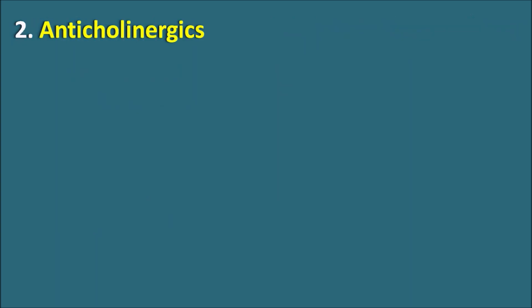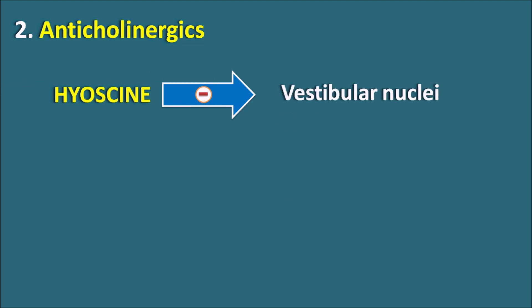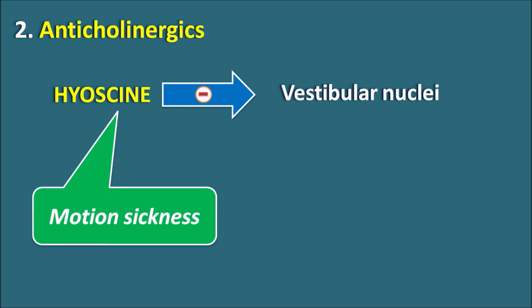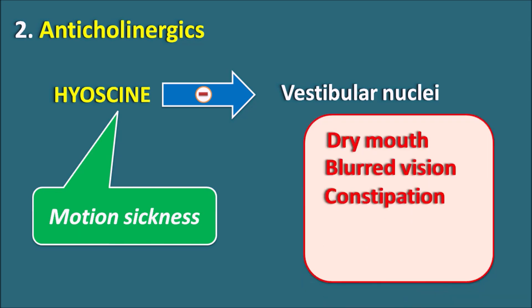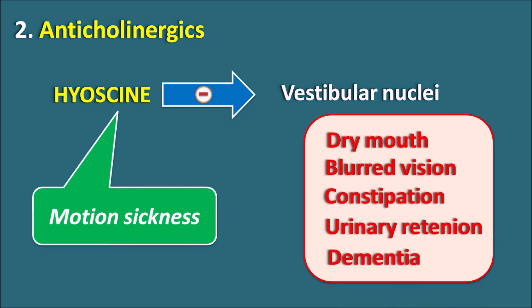The second class is the anticholinergics. Only one drug in this class is used as an anti-emetic: hyoscine, a natural product derived from tropane alkaloids. This drug can block vestibular-nucleus-stimulated nausea and vomiting, which is why hyoscine is used in the treatment of motion sickness. Since it acts as an anticholinergic, it produces related side effects including dry mouth, blurred vision, constipation, urinary retention, and sometimes loss of memory resulting in dementia.